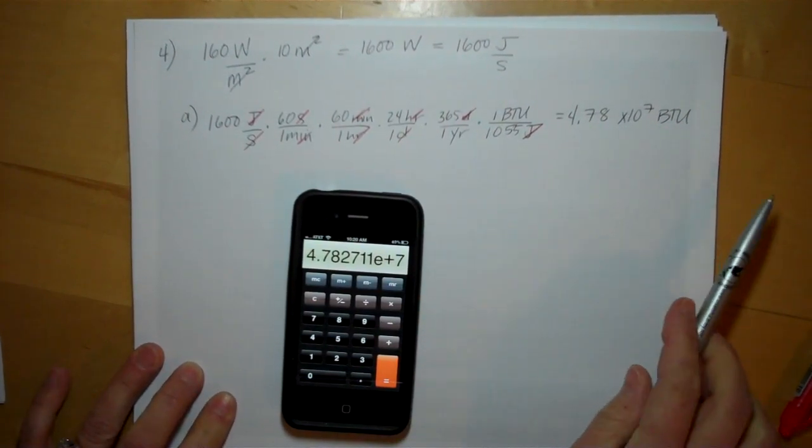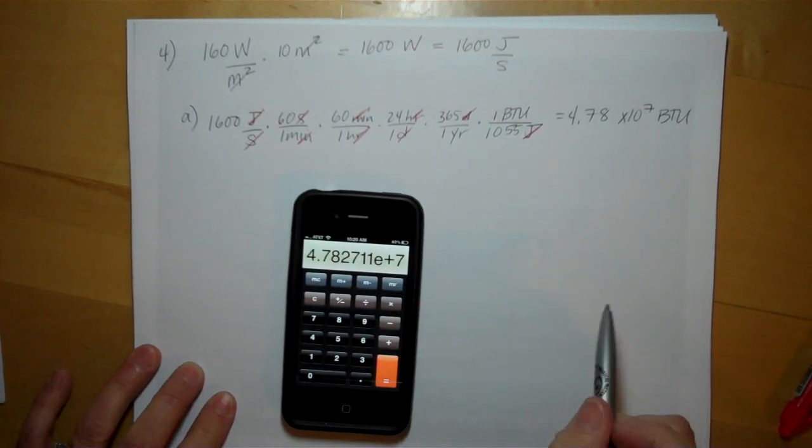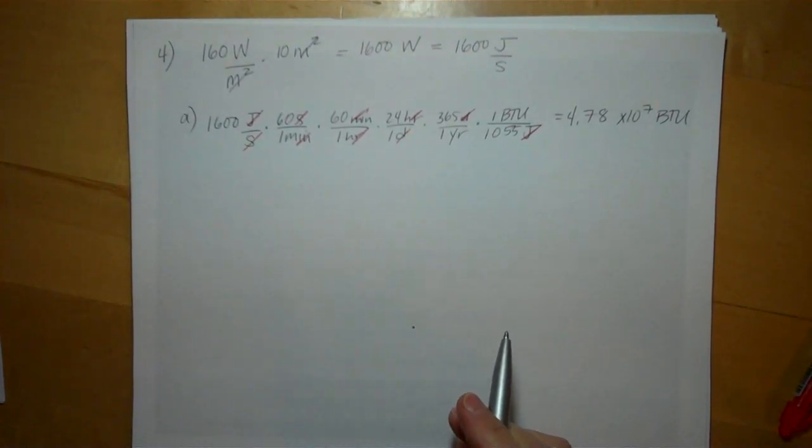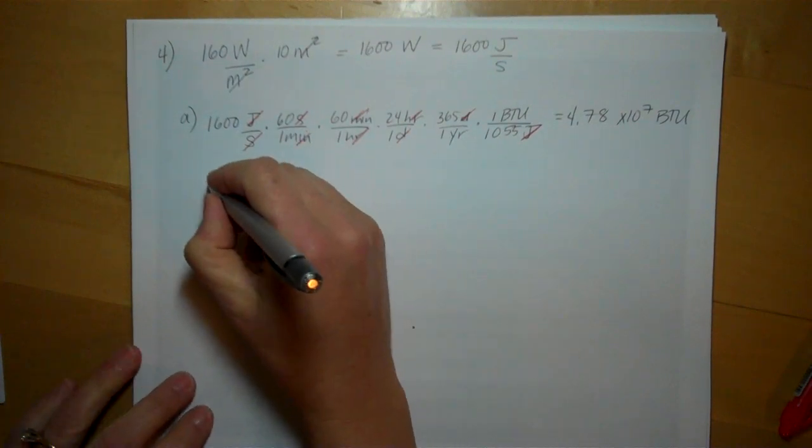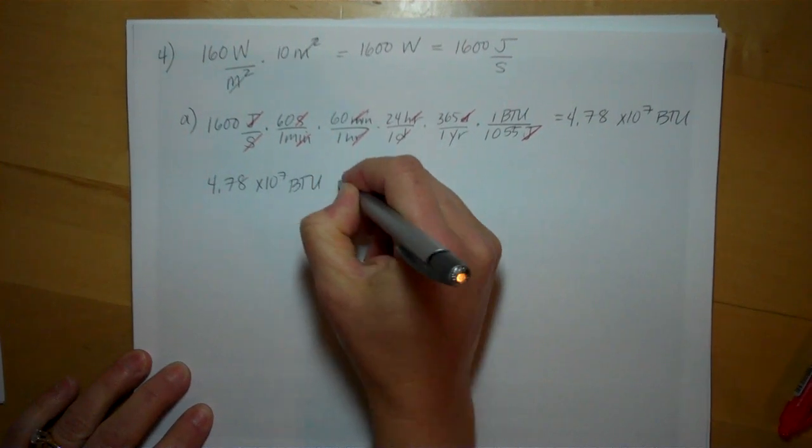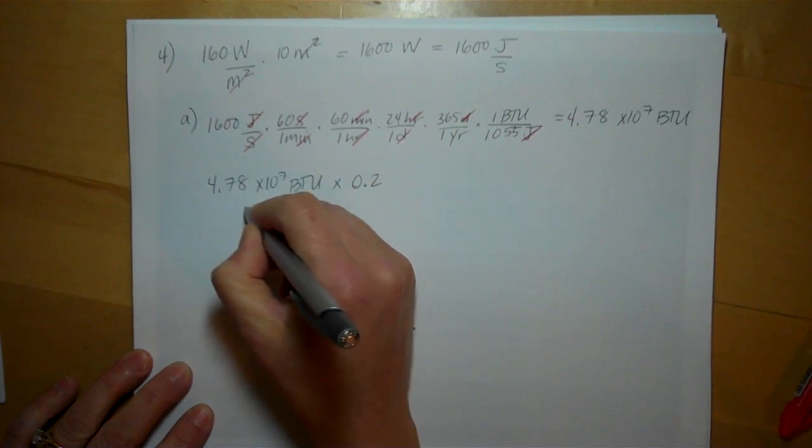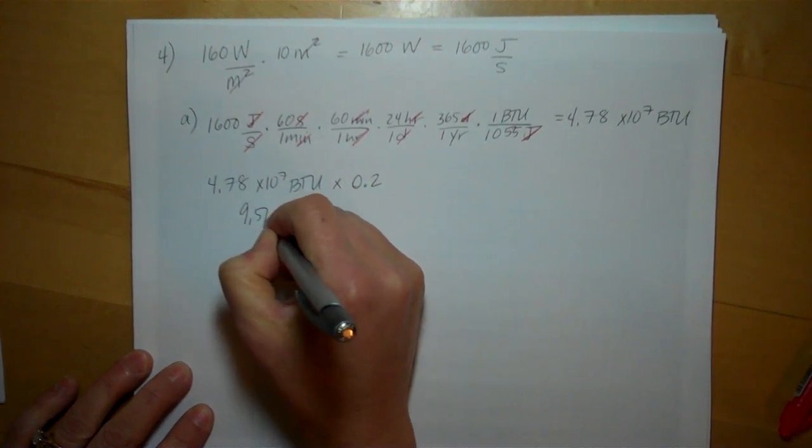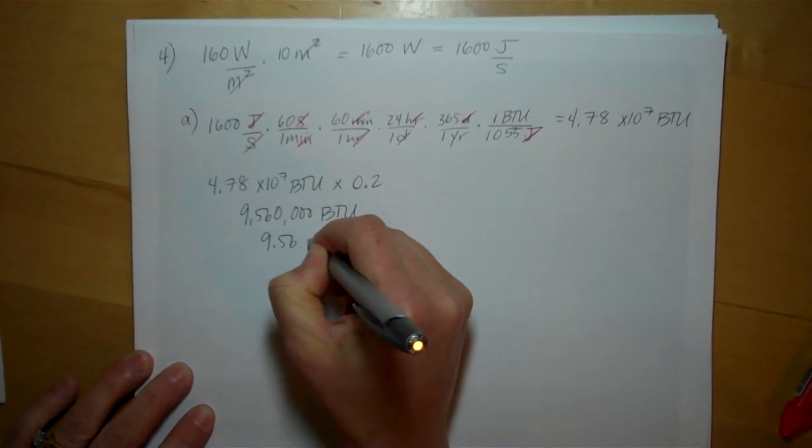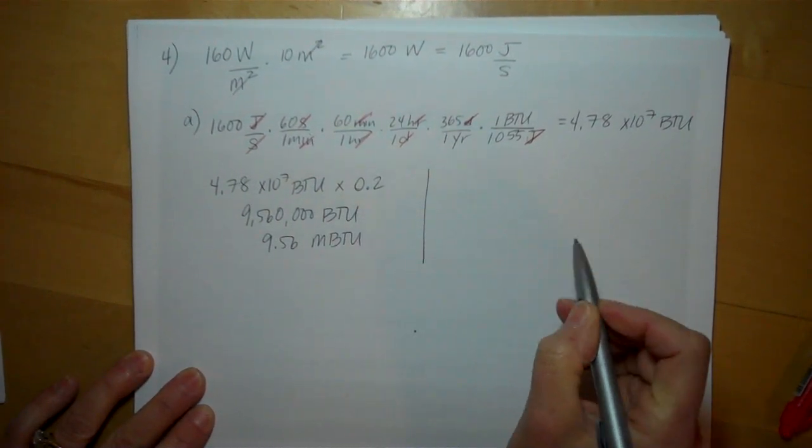Now we'll get to the efficiency. It said our solar panel system is only 20% efficient. There are two different ways you could do this. I think the easiest way is to multiply it by 20%: 4.78 times 10 to the 7th BTUs times 20%, which comes to 9 million 560 thousand BTUs, or 9.56 mega BTUs.